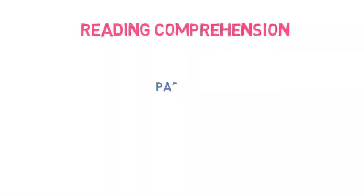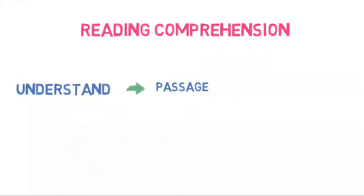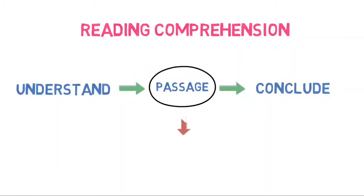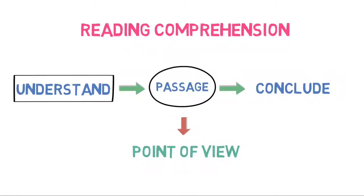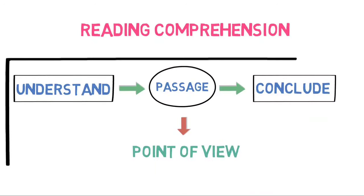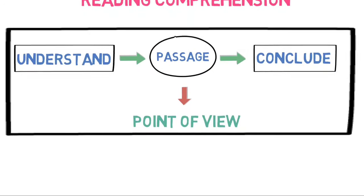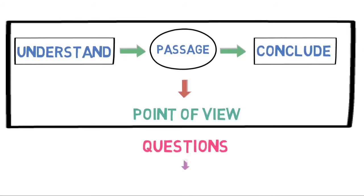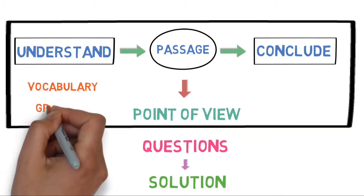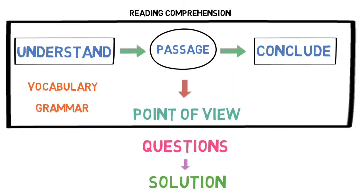What is reading comprehension? Reading comprehension is the ability to understand the content of the given passage and to draw a conclusion from it. The author will give his point of view from different angles for a particular topic, and you have to understand and draw out a conclusion from it. To test what you have comprehended from a passage, a set of questions will be given to you. You must have a strong command of vocabulary and grammar to understand reading comprehension, or in short, RC.